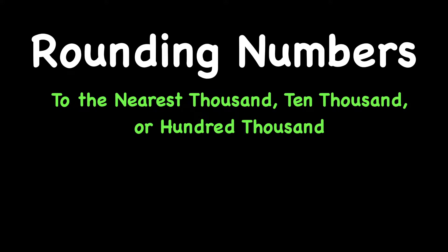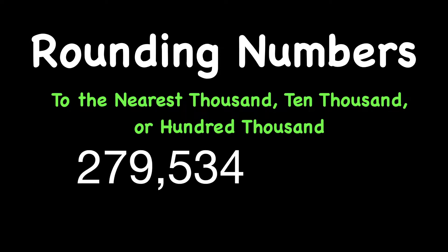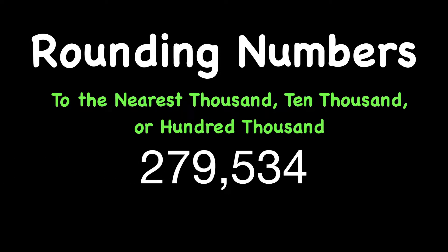Hey everyone, Mr. W here. Today's lesson is on rounding numbers, but this time we're rounding to the nearest thousand, ten thousand, or a hundred thousand. So we're working with six-digit numbers today, like two hundred seventy-nine thousand, five hundred thirty-four.